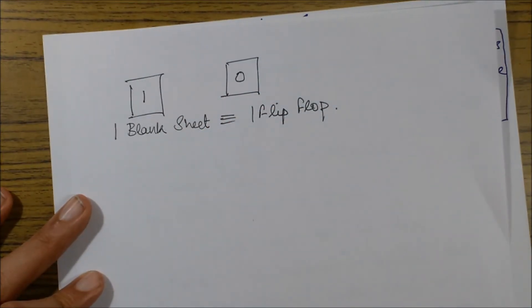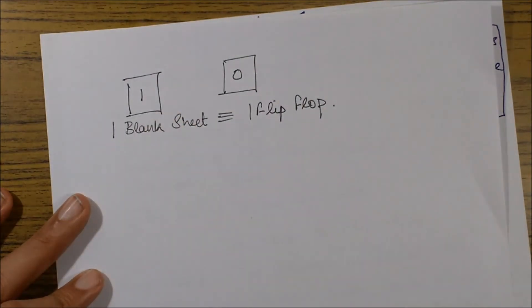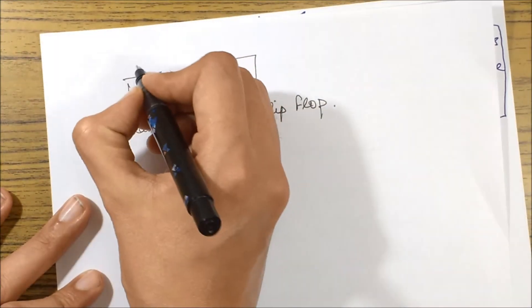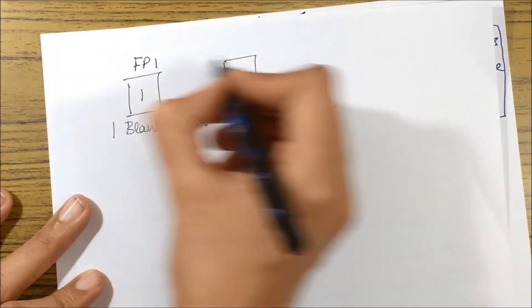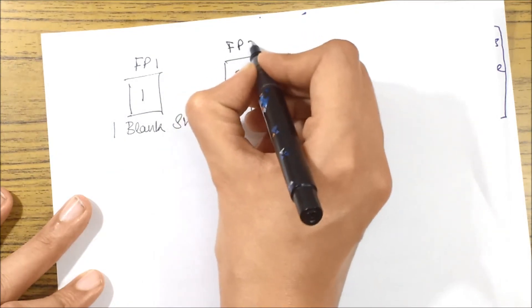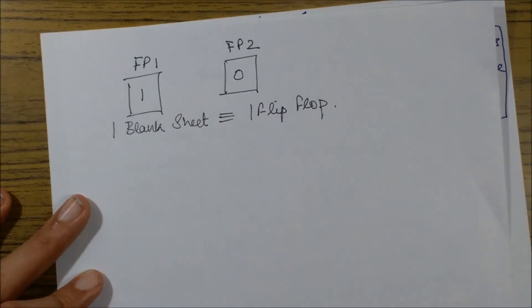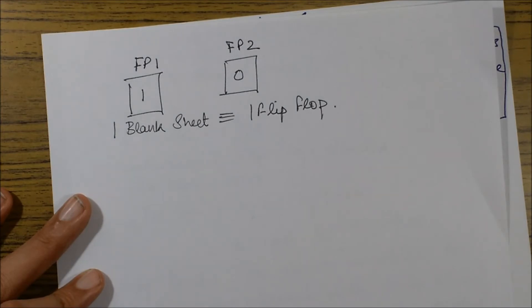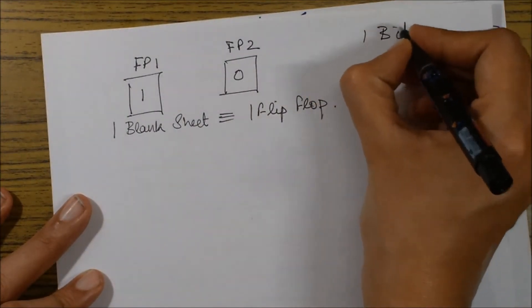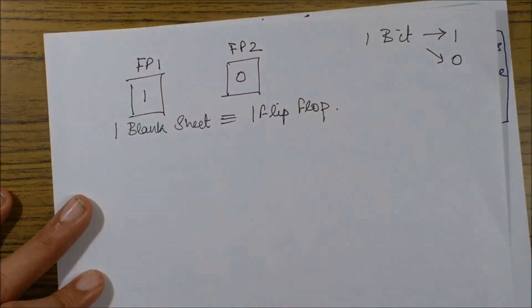I can either write one or zero, but I can write only one bit. A flip-flop can only store one bit of data, and this one bit is stored in this flip-flop. If I have two flip-flops, flip-flop one which is storing one and flip-flop two which is storing zero, I have two flip-flops to store two bits. One bit clearly has two combinations, one and zero.